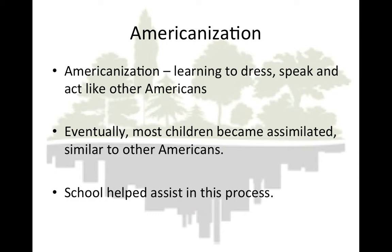While some adult immigrants attended night school to learn English, most were too busy working and caring for their families to spend time learning a new language or culture. It was left to their children to learn English and become Americanized — learning to dress, speak, and act like other Americans. These immigrant children eventually became assimilated, similar to other Americans. America was seen as a melting pot in which immigrants were melted down and reshaped, and America's public schools greatly assisted in this process. Often Americanization was accomplished through conflict — for example, immigrant parents might desire an arranged marriage for their children, while their children insisted on finding their own partners according to American custom.